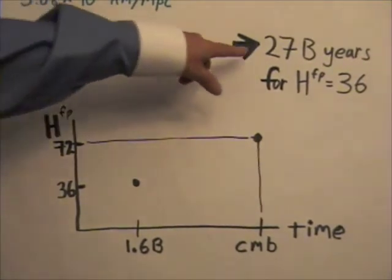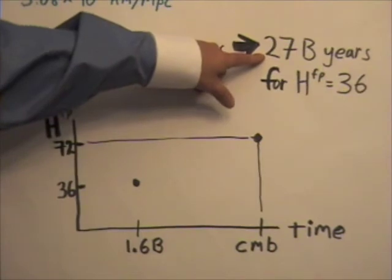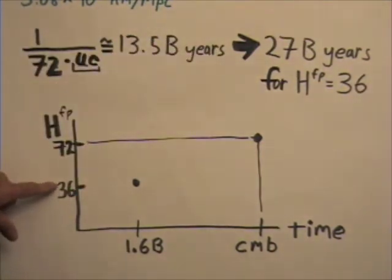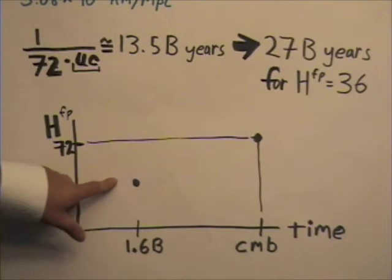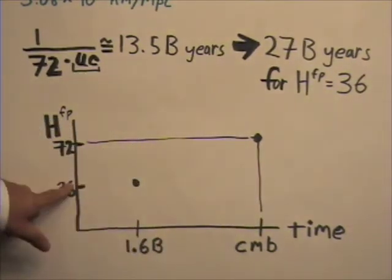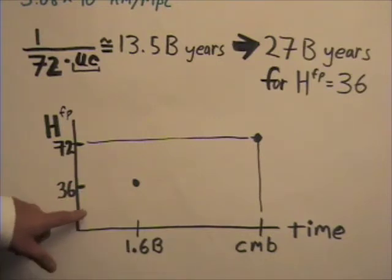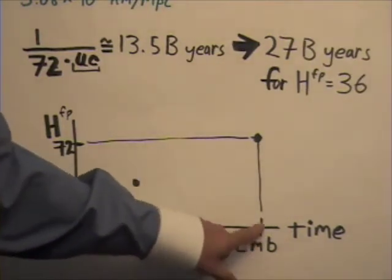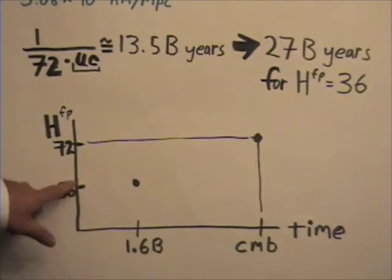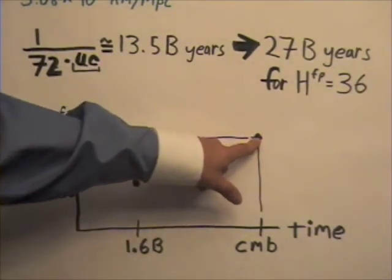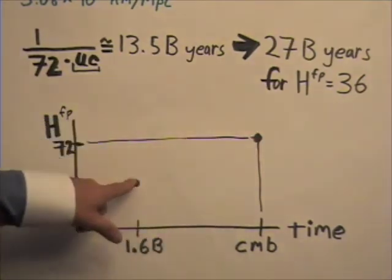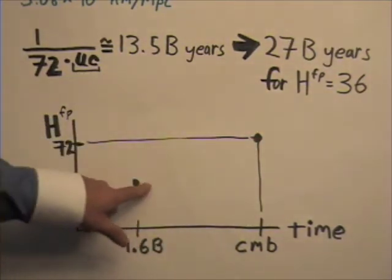Now, the 27 billion year estimate would be accurate if the Hubble constant was more or less at 36 all the way back in time. But we know that it wasn't. So the question of figuring out how far back in time this was depends on the shape of this curve. In other words, when was it that the Hubble constant dropped from being about 72 near the Big Bang to about 36 as we find it now?